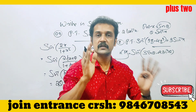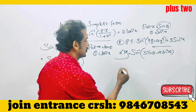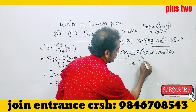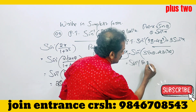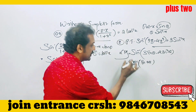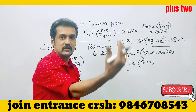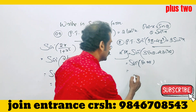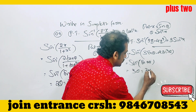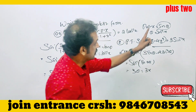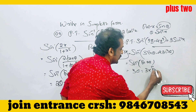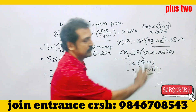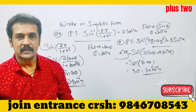Now, 3 sin θ minus 4 sin cubed θ becomes sin 3θ by the triple angle formula. Therefore the expression is sin inverse (sin 3θ), which equals 3θ, which equals 3 sin inverse x. Nice problem.